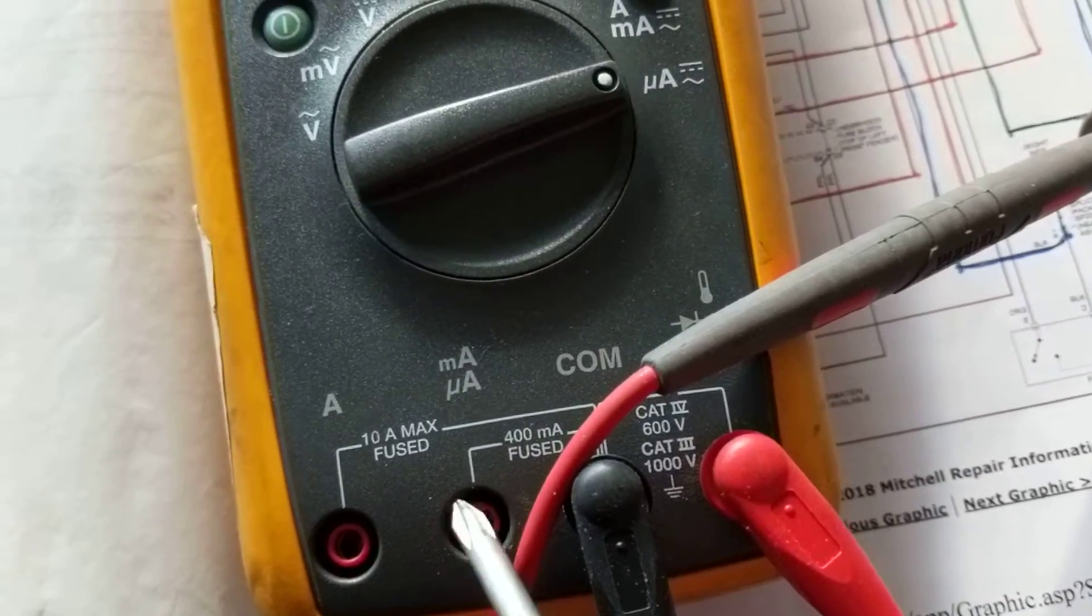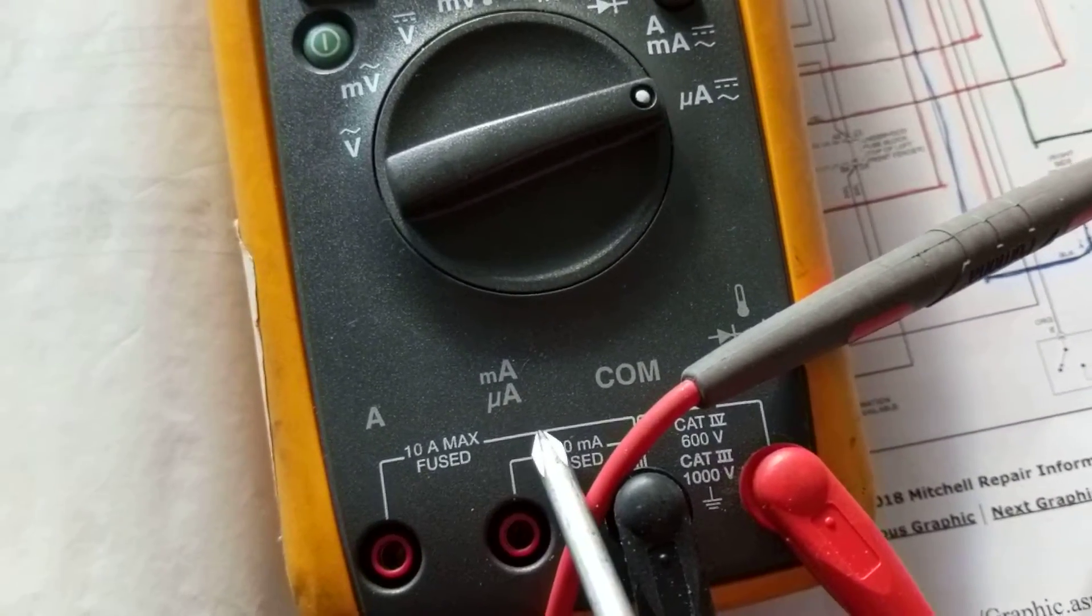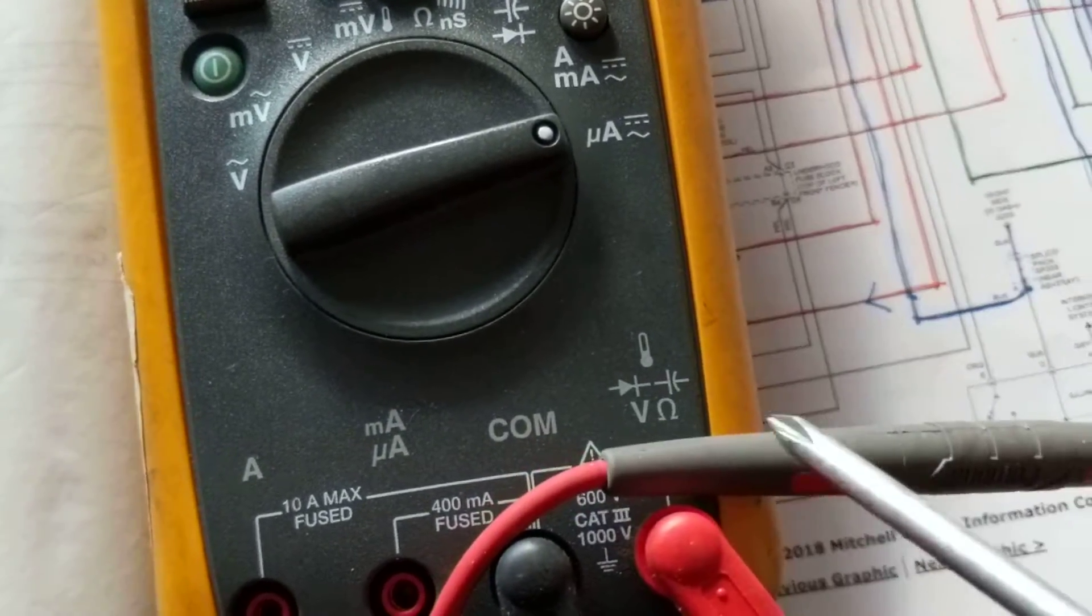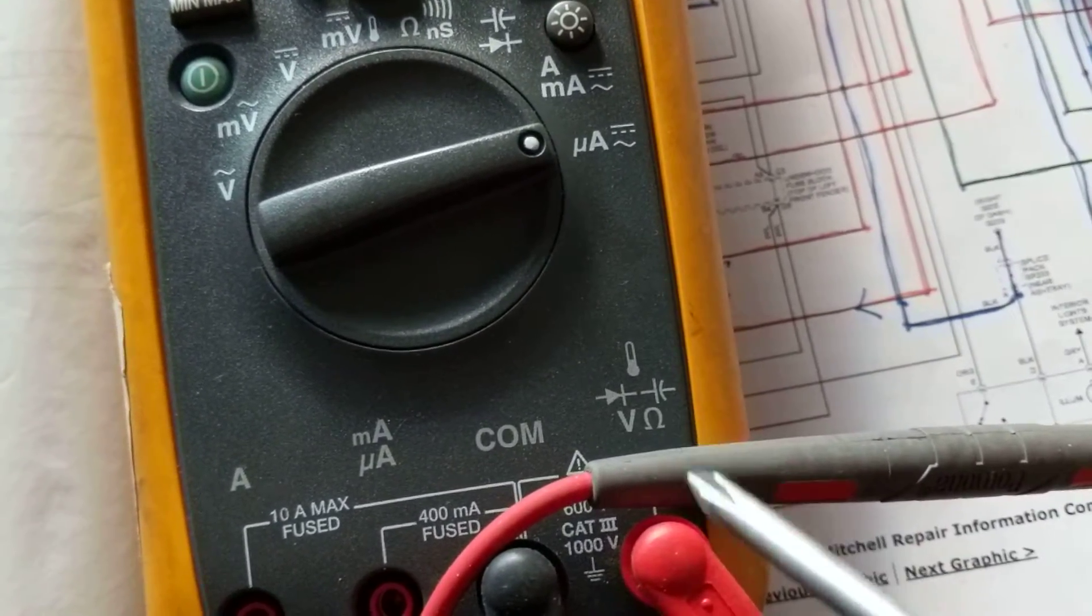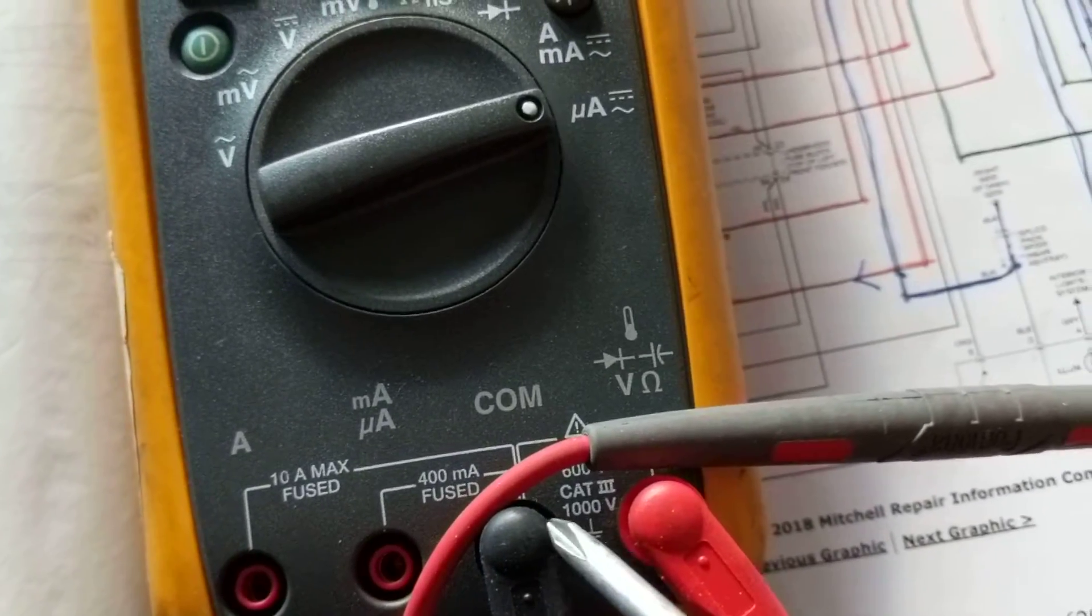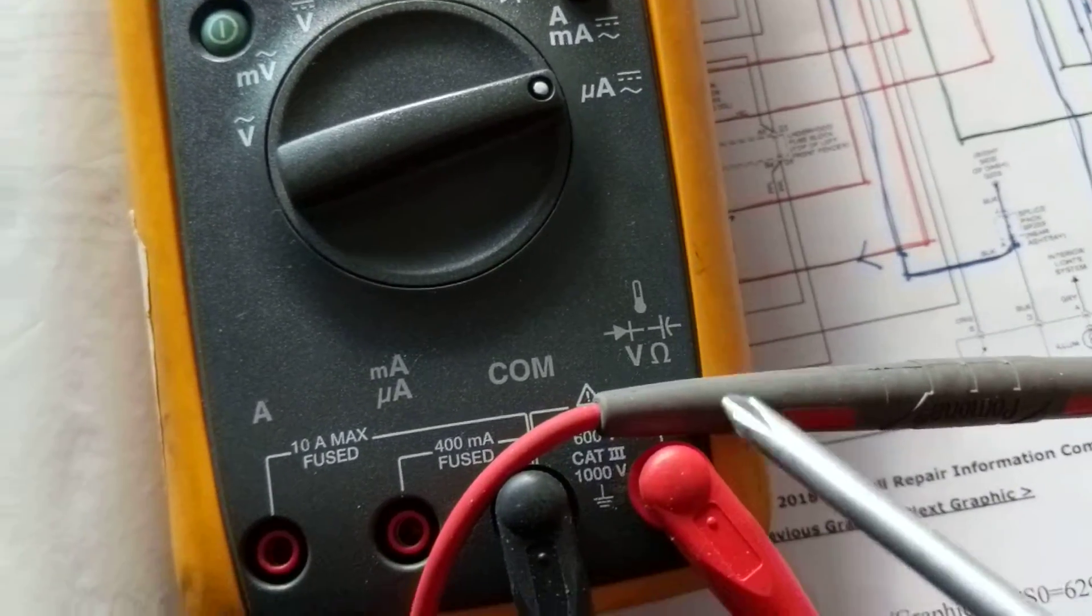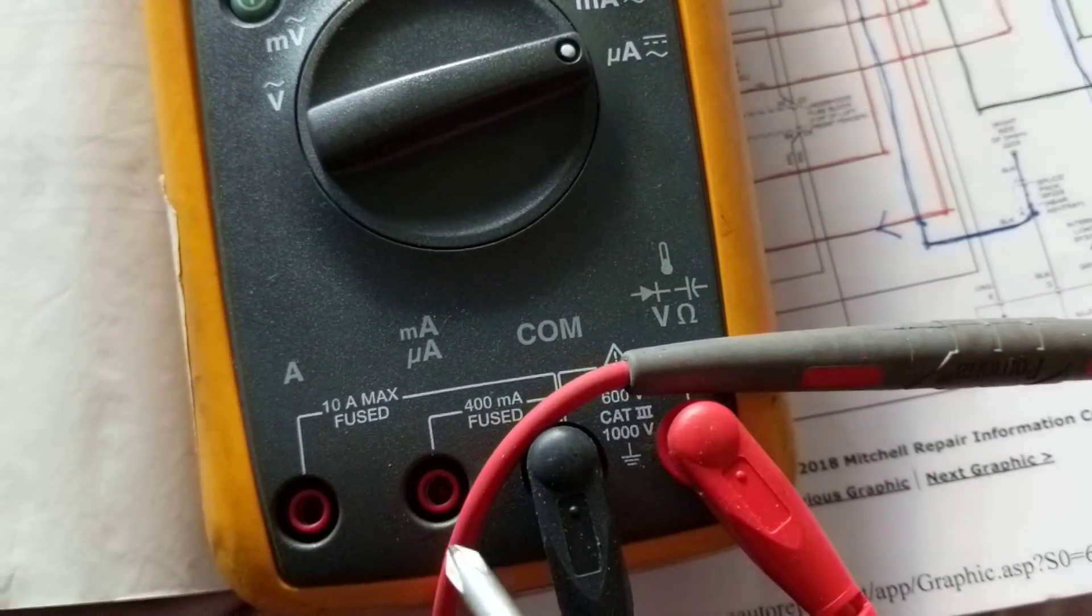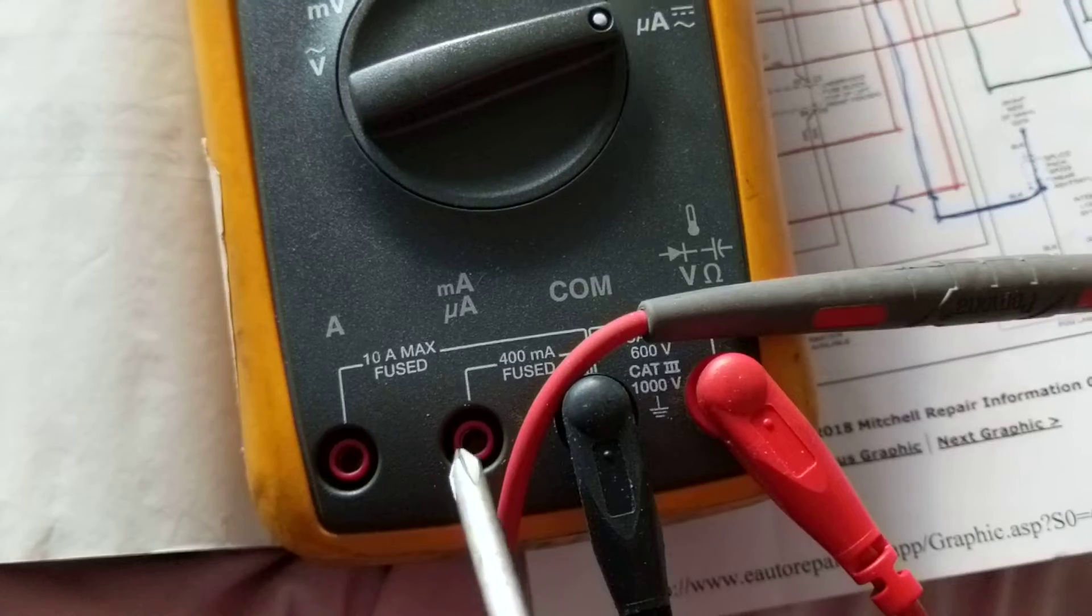This is for amps. This is volts, ohms, and diode. This one, the black one, is always the common. The red one is always for volts, and this is a CAT III up to a thousand volts.